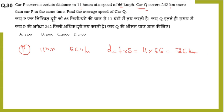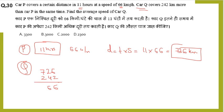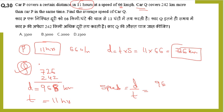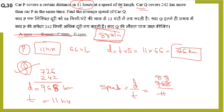Car Q covers 242 kilometers more than car P in the same time. So car Q covers 726 plus 242 which is 968 kilometers in the same 11 hours. They are asking for the speed of car Q. Speed equals distance by time: 968 kilometers divided by 11 hours equals 88 kilometers per hour. The speed of car Q is 88 km/hr.